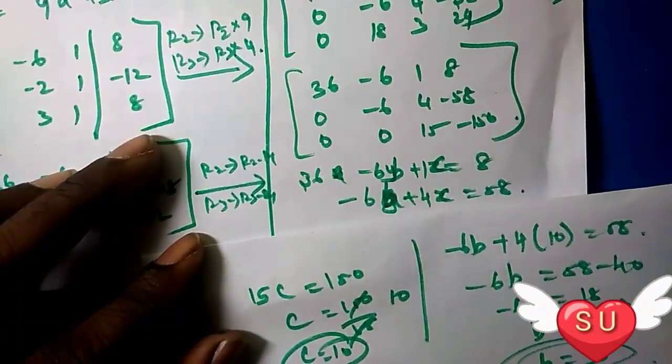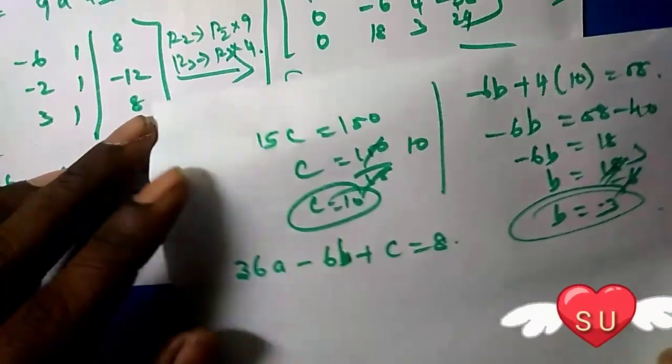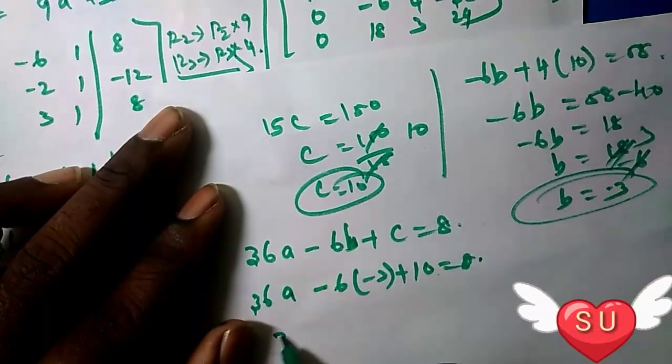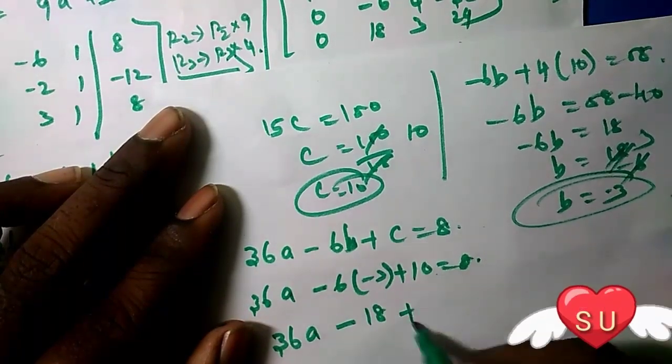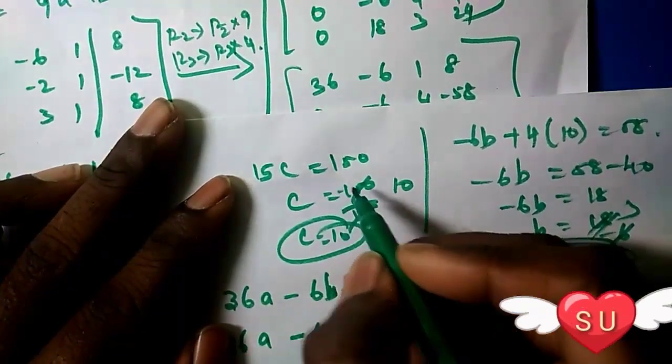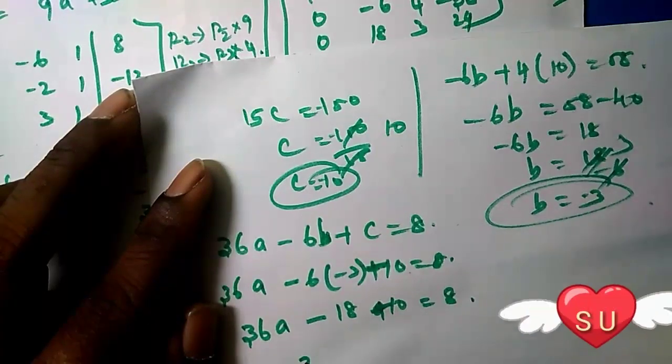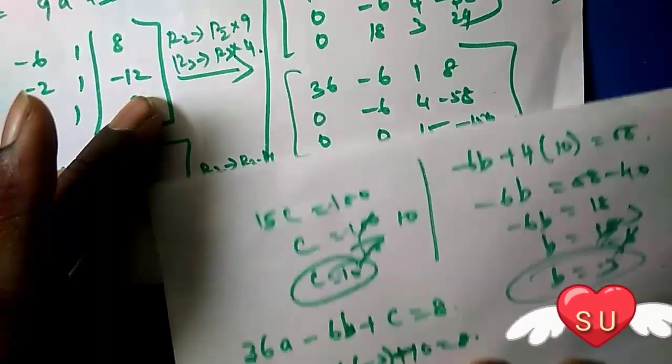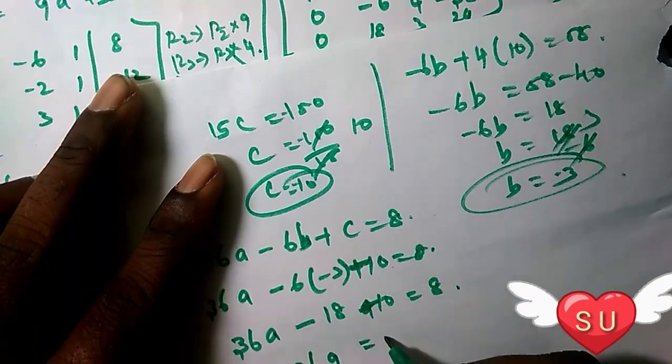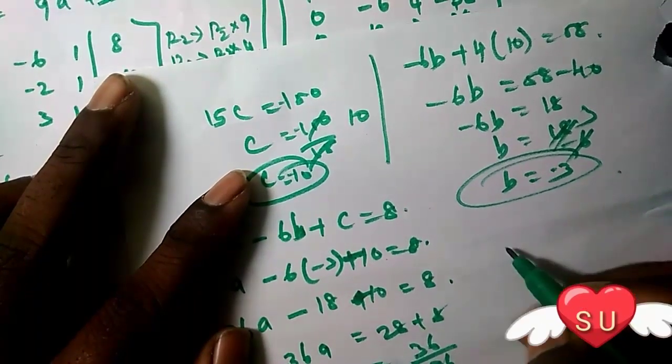Now using the first equation: 36a - 6b + c = 8. Substituting b = 3 and c = -10: 36a - 6(3) + (-10) = 8, so 36a - 18 - 10 = 8. Therefore 36a = 36, giving a = 1.